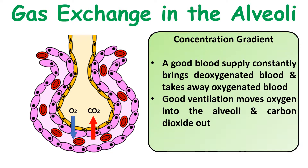All of these things help maintain the concentration gradient. That good blood supply helps maintain the concentration gradient so oxygen always moves into the blood and carbon dioxide always moves out, because the oxygenated blood is always taken away and the deoxygenated blood coming from the body is continuously brought to replace it. Inside the alveoli, the concentration gradient is maintained because carbon dioxide is taken away by the ventilation system, reducing its concentration, and fresh air from outside replaces it, so the oxygen concentration within the alveoli is always high and oxygen will always diffuse into the bloodstream.